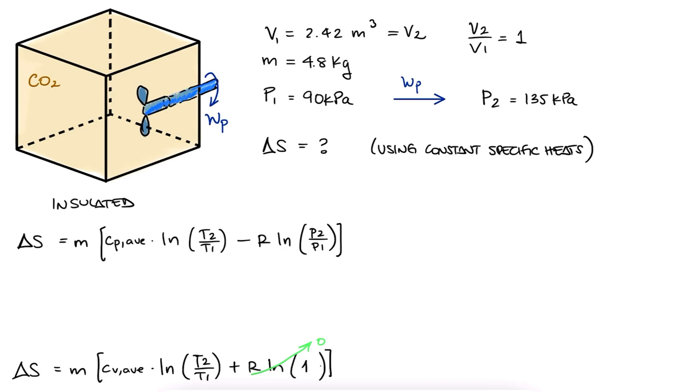Additionally, regardless of which one we use, we need the ratio of the temperatures. We didn't receive any temperature information, but since CO2 is an ideal gas and the volume is constant, T2 over T1 equals P2 over P1. So T2 over T1 is just 135 over 90, or 1.5.